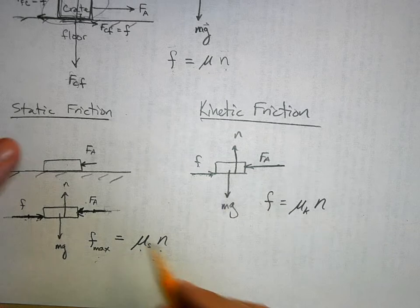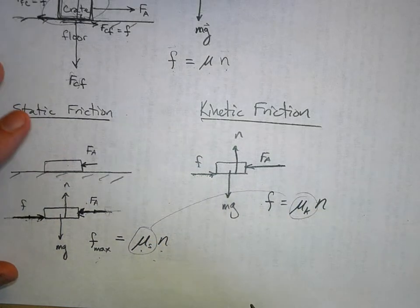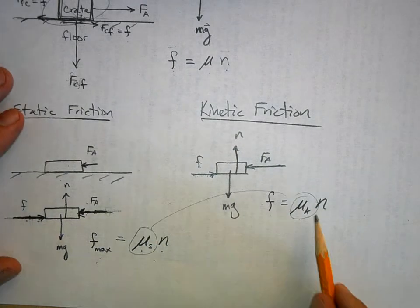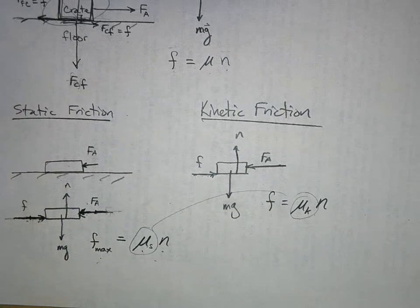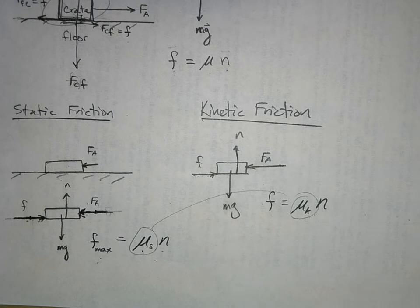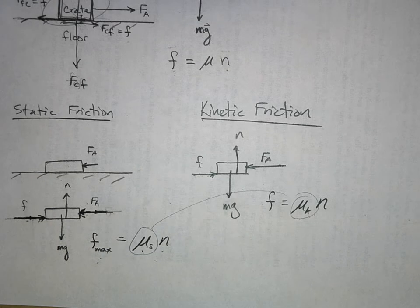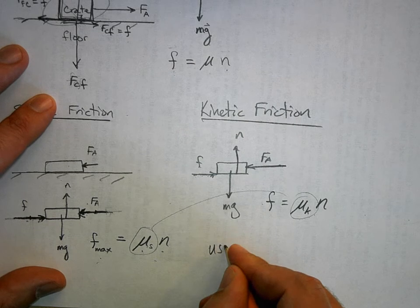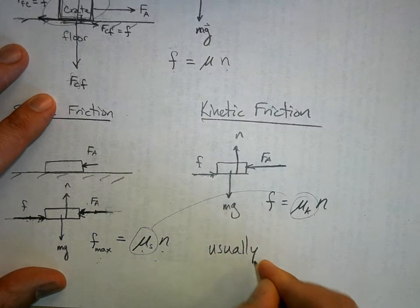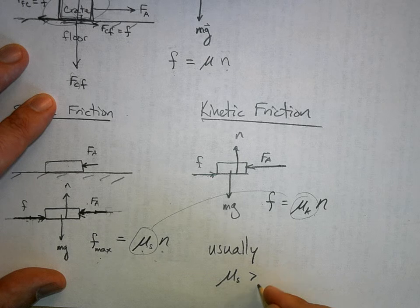Here we say that the force of friction is going to be equal to mu kinetic times the normal force. Why do I distinguish between the kinetic and the static coefficients of friction? With a lot of materials, you push on it and push on it, and then once it starts to slide, it's a little bit easier to keep it going. That's because usually for most materials, mu static is greater than mu kinetic.